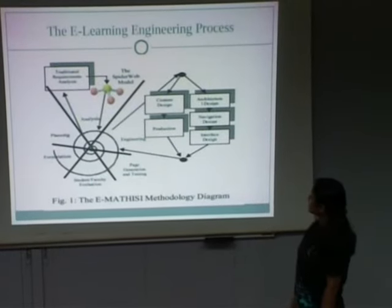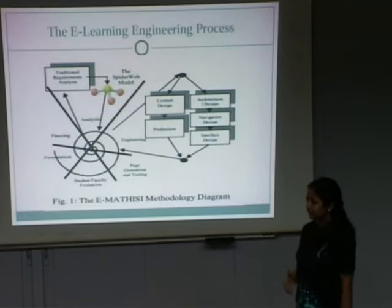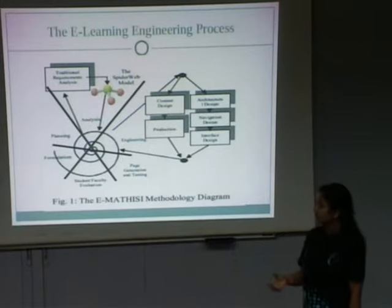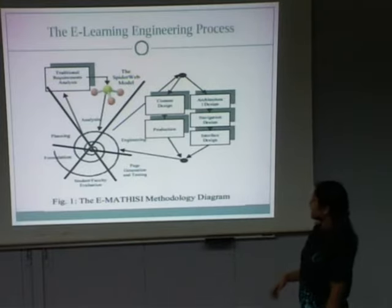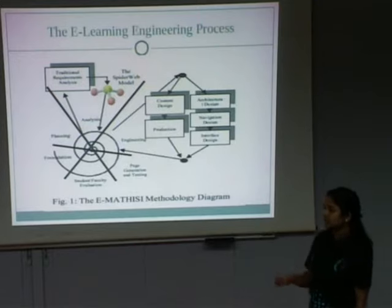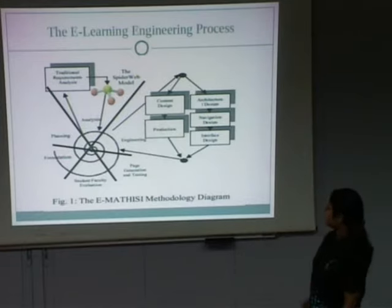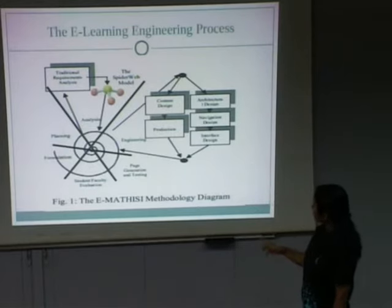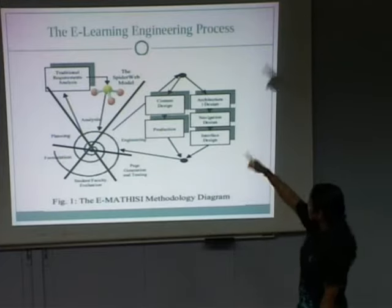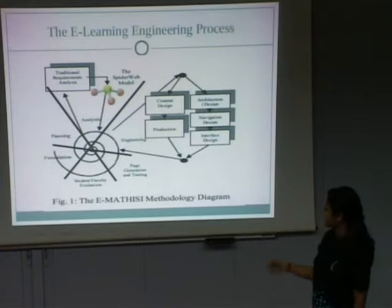This diagram shows the whole process of e-learning engineering. First, formulation — understanding the goal of the e-learning. Then planning, involving estimation of cost and associated risks. Next, user requirements and system requirements are analyzed. Then the engineering phase comes, consisting of two parallel paths: content design and production, and architecture design, navigation design, and interface design. These two paths continue in parallel, then the e-learning page is generated and tested.